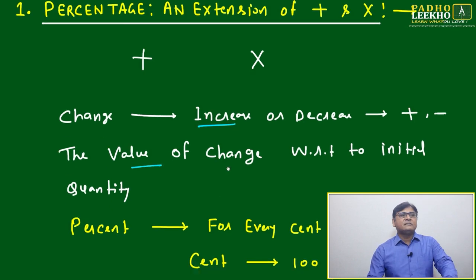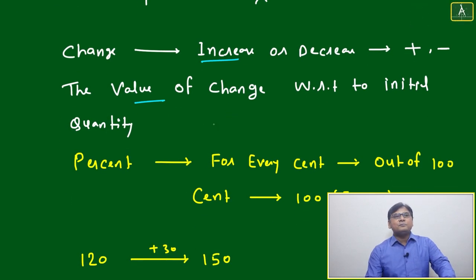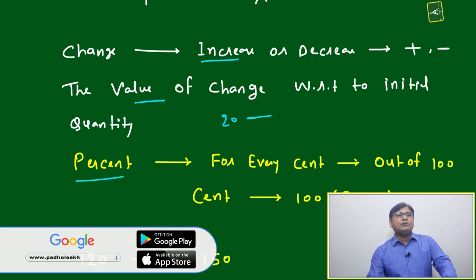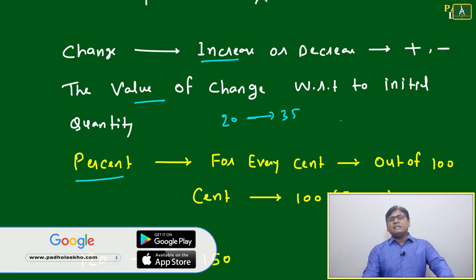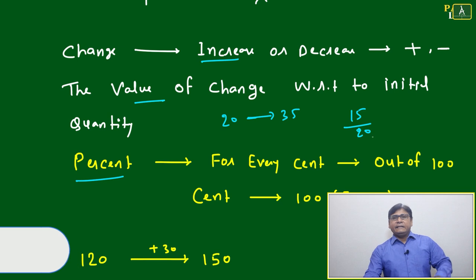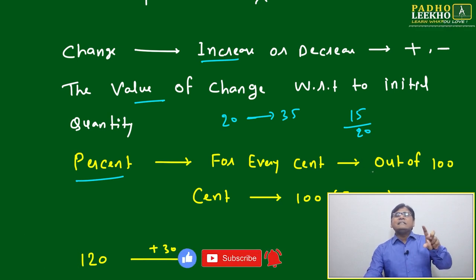The value of change with respect to initial quantity. Then what is percent? Suppose we take the same example: 20 is becoming 35. What is the change? Your change is 15 out of 20, 15 out of 20.